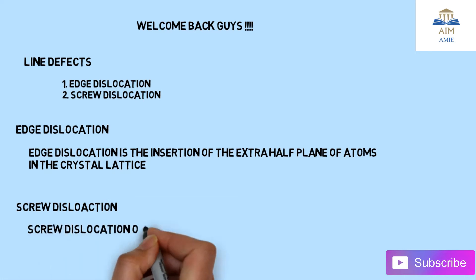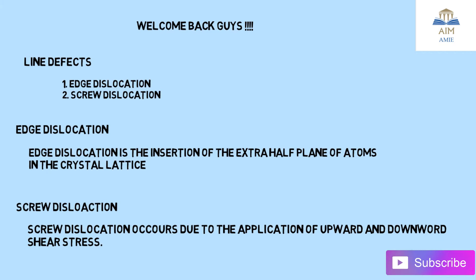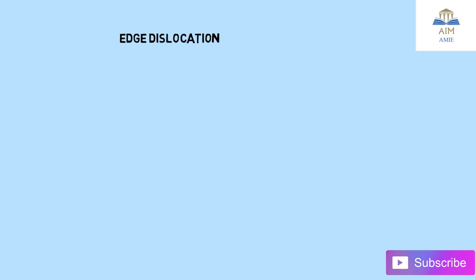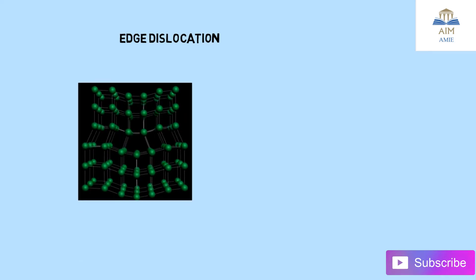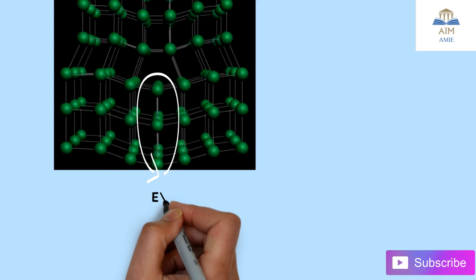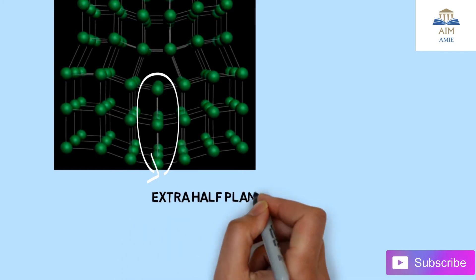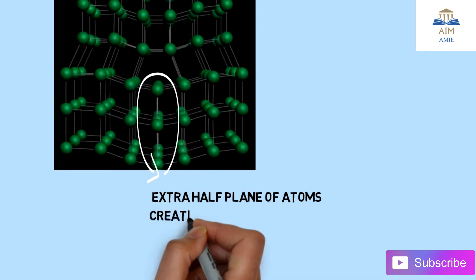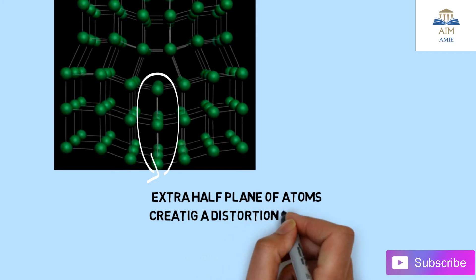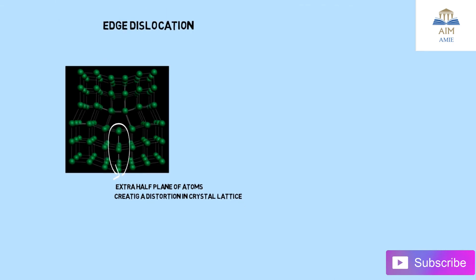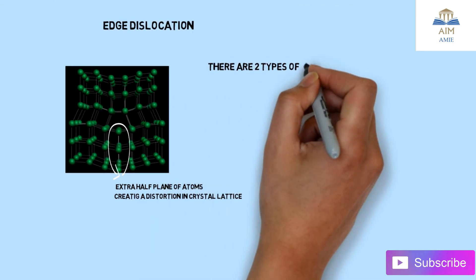Screw dislocation occurs due to the application of upward and downward shear forces. In this image, we can see there is an extra half plane of atoms — that vertical line — which is the extra half plane of atoms creating distortion in the crystal lattice and in the surrounding lattice.